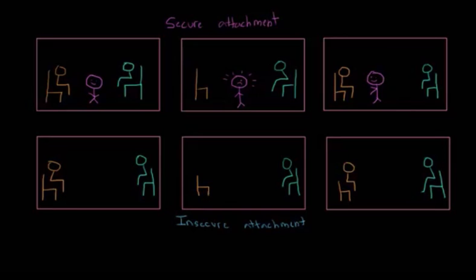Insecurely attached children showed some different behaviors. When these children were first brought into the room, they tended to cling to their mother just like the securely attached children did. However, unlike the securely attached children, they tended to stay with their mother. They tended not to explore the room. And just like the securely attached children, when the mother left, the children became really upset.